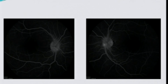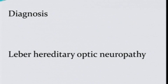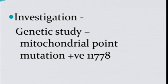The next investigation is genetic study, since the cause of this optic neuropathy is a mitochondrial point mutation. When we got the genetic study done, we found point mutation 11778, which is the commonest point mutation in LHON. Identifying the mutation also helps with visual prognosis — when this mutation is present, the patient has a very poor visual prognosis and may end up with marked loss of vision, even blindness.